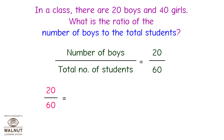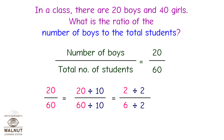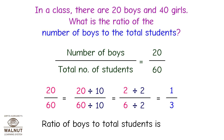We can keep reducing this fraction as long as there are common factors. We divide the numerator and denominator by 10 and we get 2 upon 6. Then we divide the numerator and denominator by 2 and we get 1 upon 3. As we cannot divide this fraction further, this is our final answer. So the ratio of the number of boys to the total number of students is 1 is to 3.